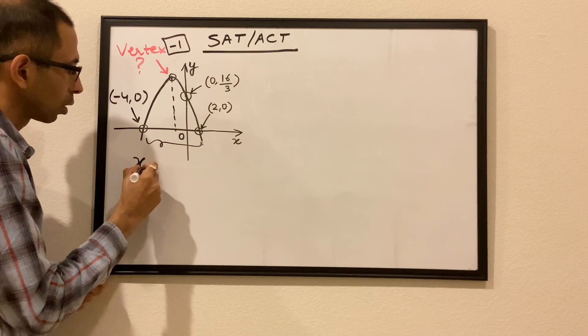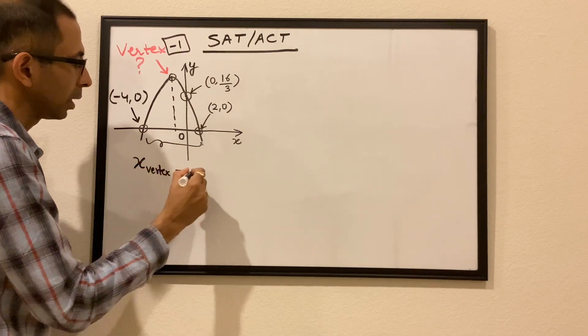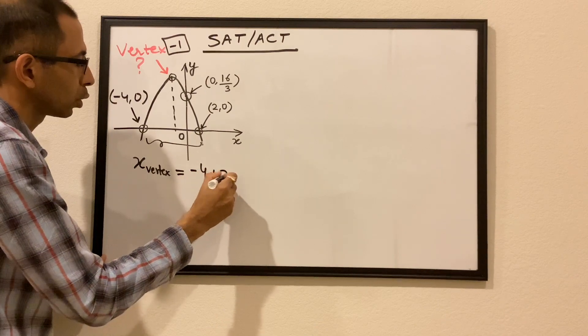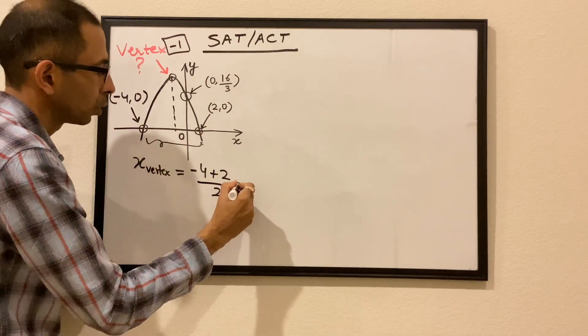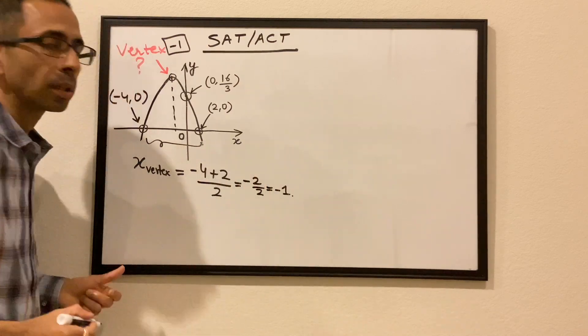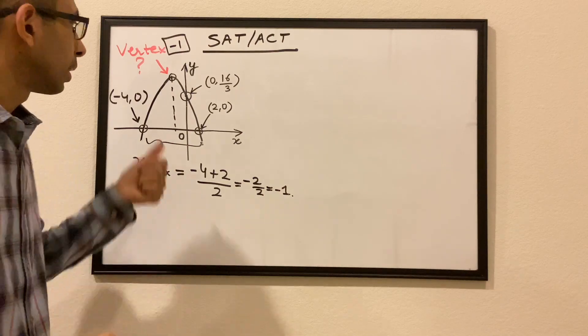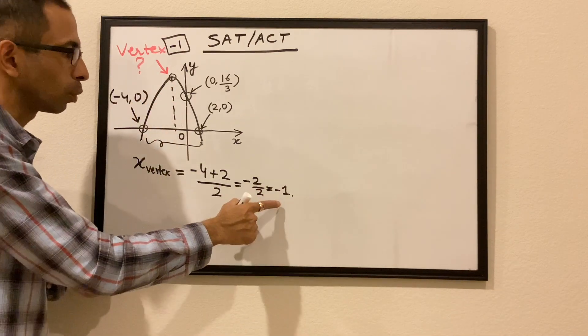So the x-coordinate of the vertex will be -4 plus 2, -4 plus 2 divided by 2, which is -2 divided by 2, which is -1. So we know very clearly that the x-coordinate of this vertex of this parabola would be -1.